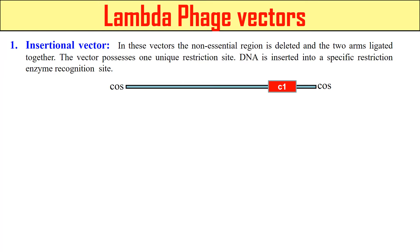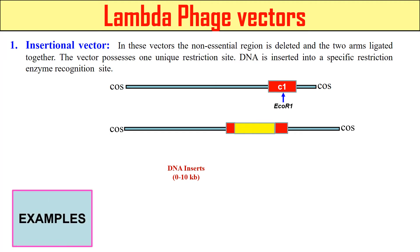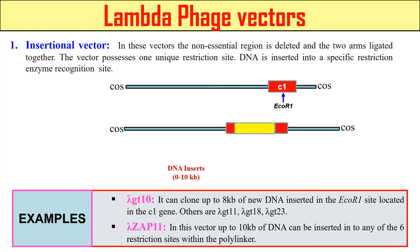Looking at Lambda phage vectors, the first type is the insertional vector. In this case, we insert our DNA into a known essential region of Lambda phage, because this vector generally has one unique restriction site. For example, at the C1 point, representing the restriction site for EcoRI. We cleave with EcoRI to create space for the DNA insert, and we can insert DNA of 0 to 10 KB into this space, giving us the insertional vector. Examples include Lambda gt10, gt11, gt18, and Lambda ZAP II, which takes up to 10 KB of DNA.